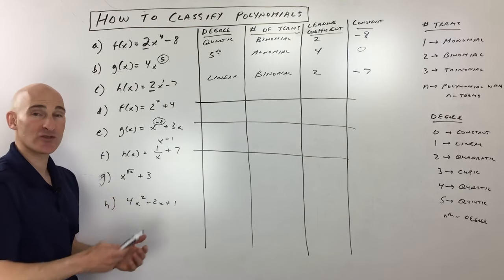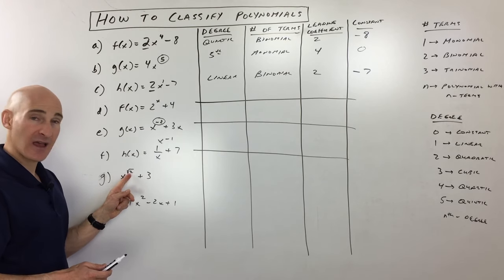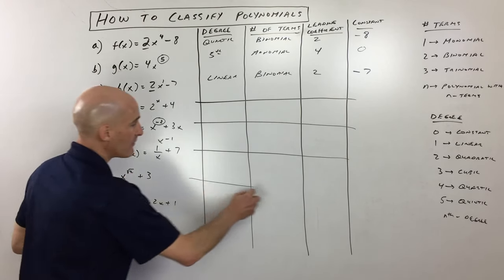x to the square root of 2 plus 3. Again, not a polynomial because you have a non-integer exponent. So this is not a polynomial.